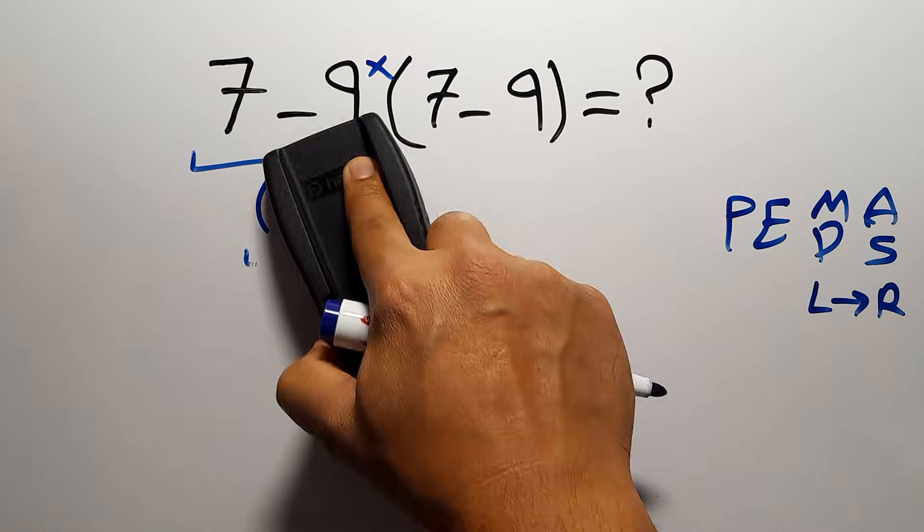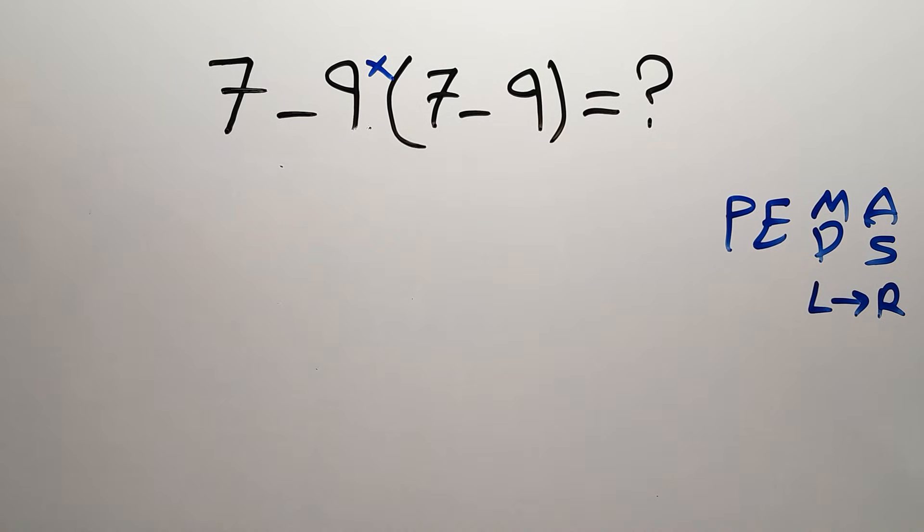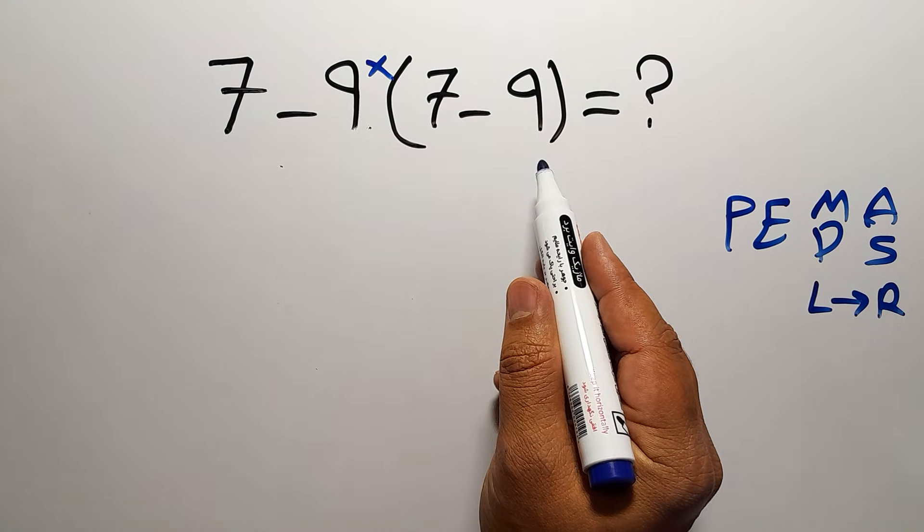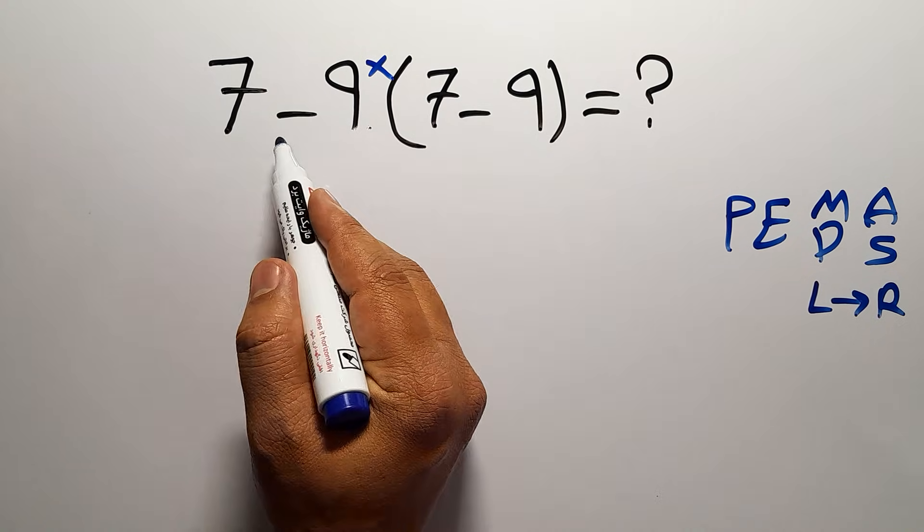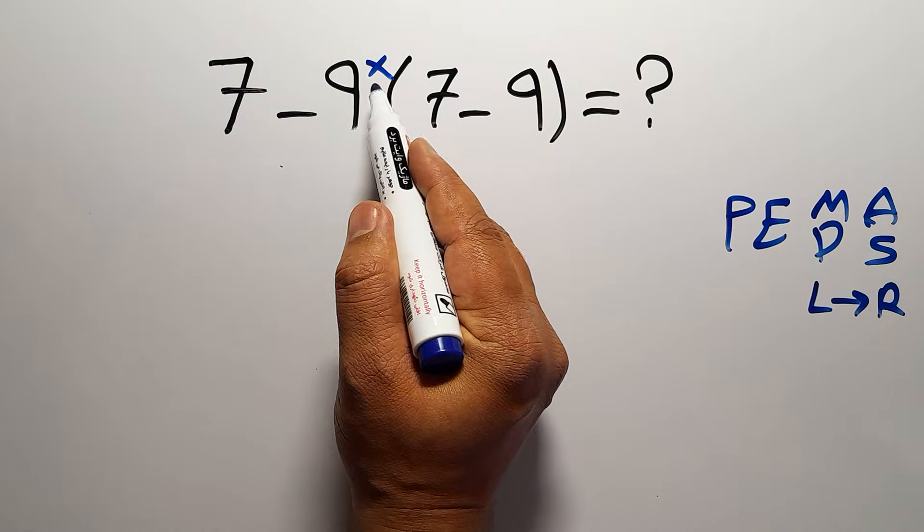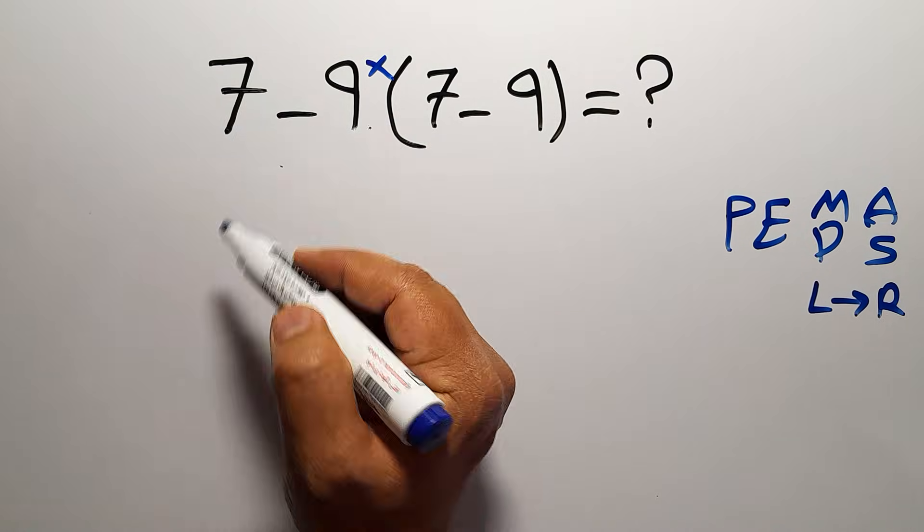So we have here a multiplication and according to the PEMDAS, first we have to do this parentheses, not this subtraction. And after this parentheses, we have to do this multiplication and finally this subtraction.